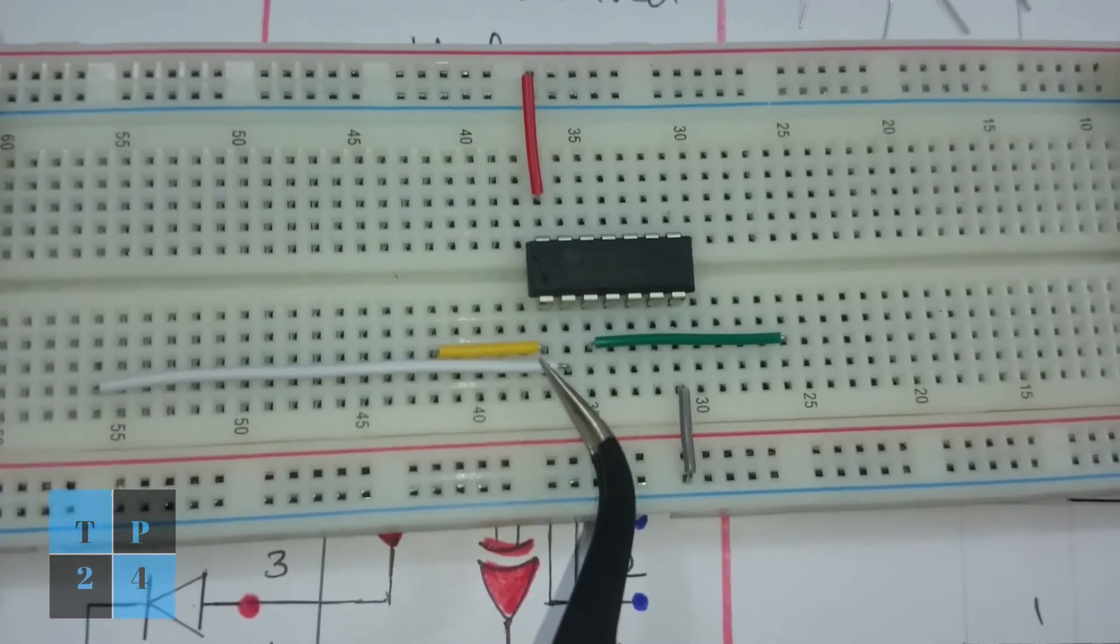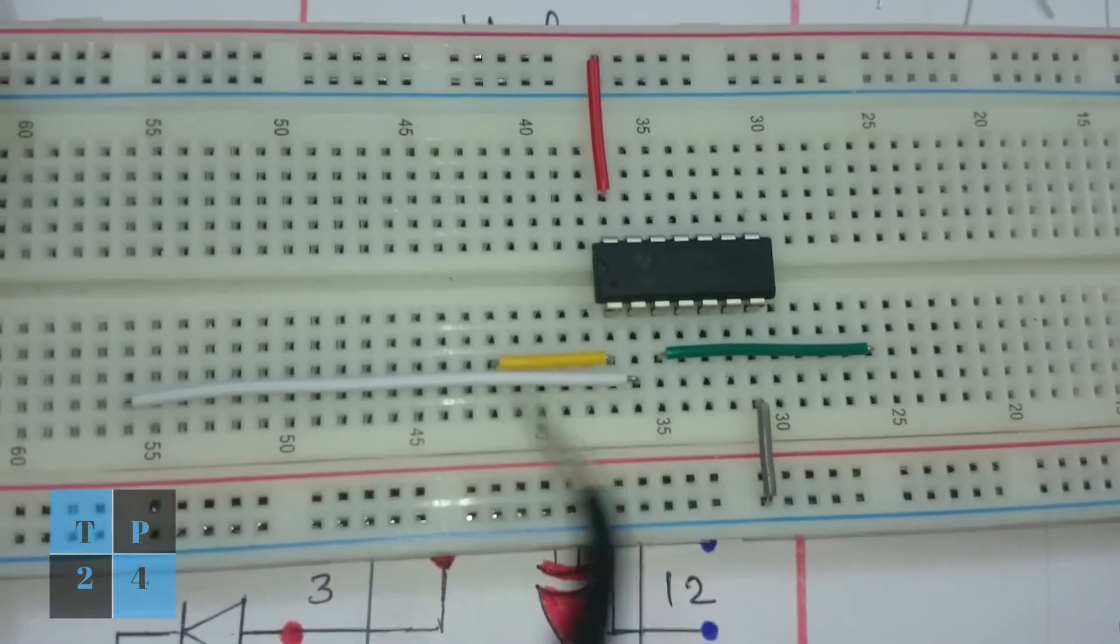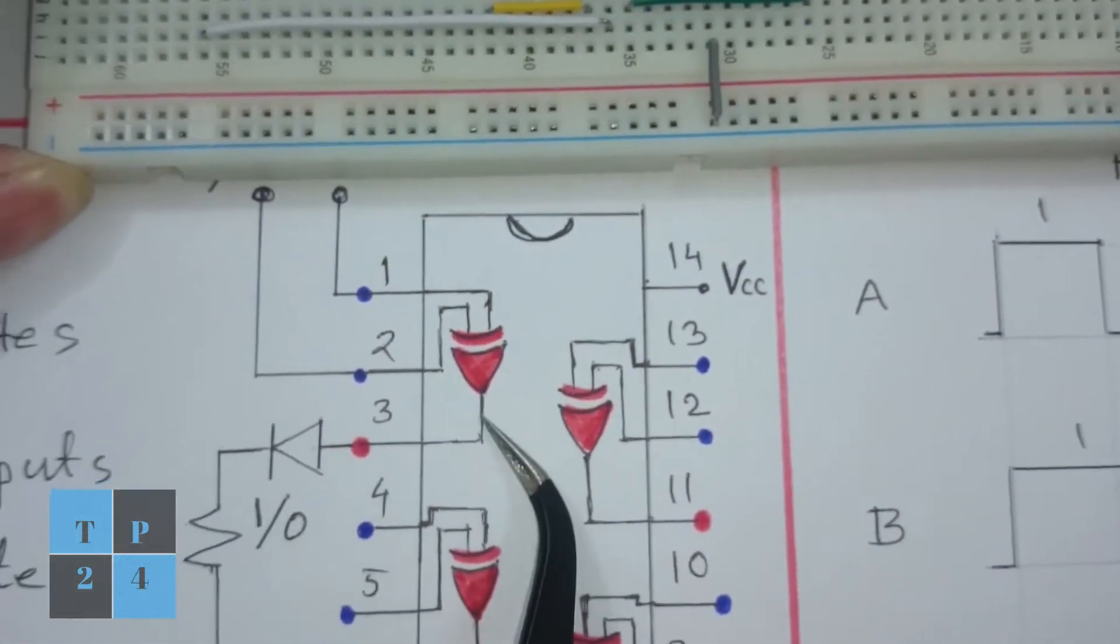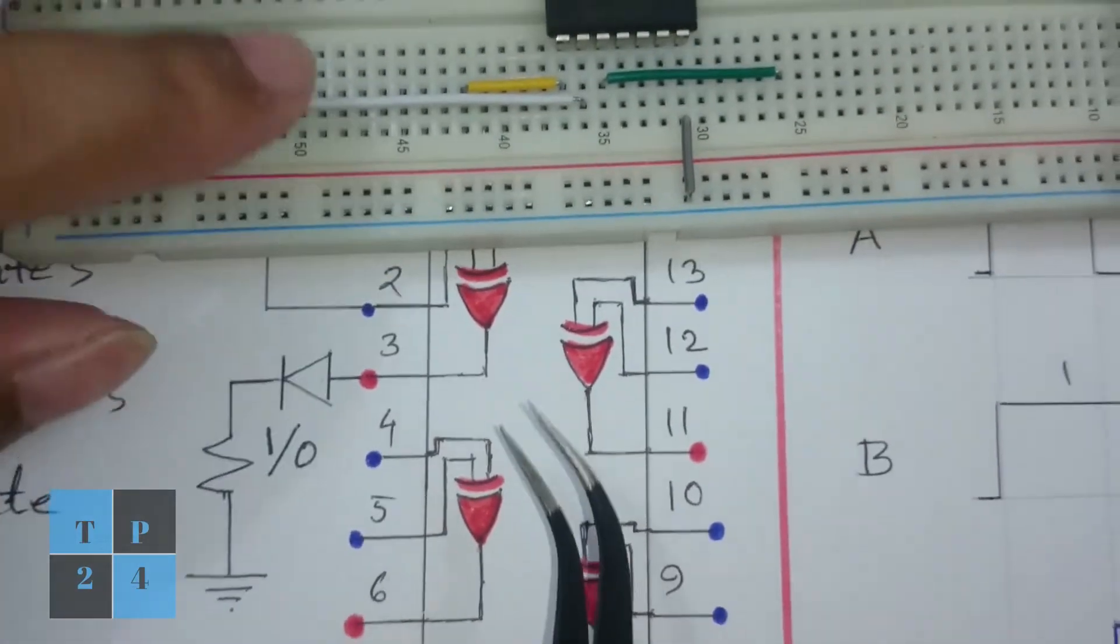Pin number 1 is input, pin number 2 is input and pin number 3 is output according to the pin diagram of this IC.